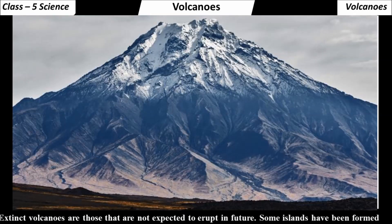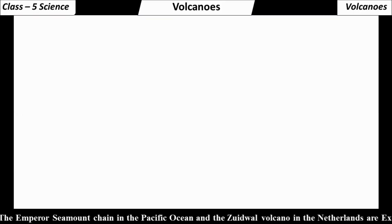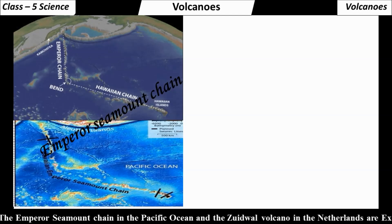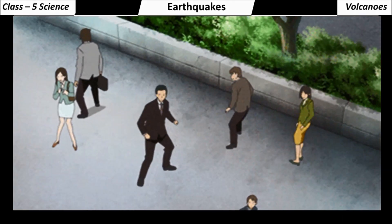Extinct volcanoes are those that are not expected to erupt in the future. Some islands have been formed by the eruption of undersea volcanoes. The Emperor Seamount Chain in the Pacific Ocean and the Eadwal volcano in the Netherlands are examples of extinct volcanoes.